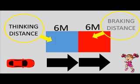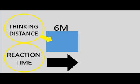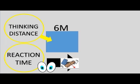Let's look at the thinking distance in more detail. Thinking distance is your reaction time — it's the time from when you see the danger, the hazard, the small child, to the time you start to press the brakes. What sort of things can affect your reaction time? Let's have a look at that.